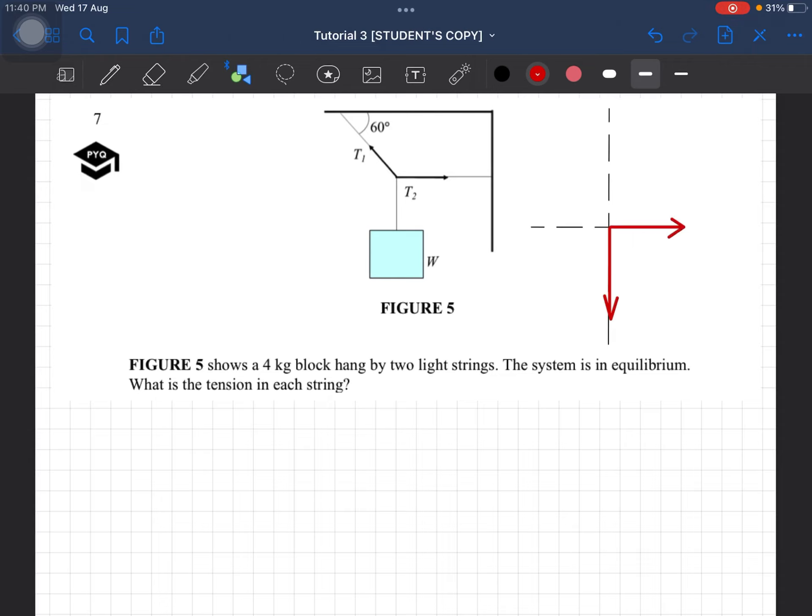We have tension 2. And then we have T1, tension 1. So the 60 degree is at this place here. This one is weight MG.